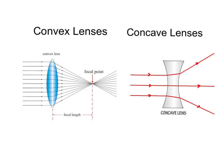Just as we had convex and concave mirrors, we also have convex and concave lenses. If we look at these lenses right here, we can see that convex lenses converge light to a point, and we call that point the focal point. So convex lenses converge light.